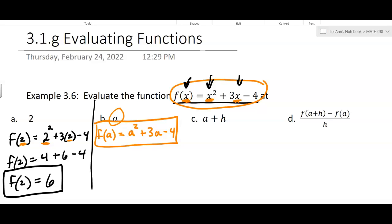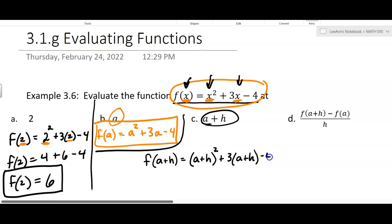Now the next one, we're going to put in A plus H. I'm going to use a little more room here. We're saying f of A plus H. What is that going to equal? It's going to equal A plus H squared plus 3 times A plus H minus 4.